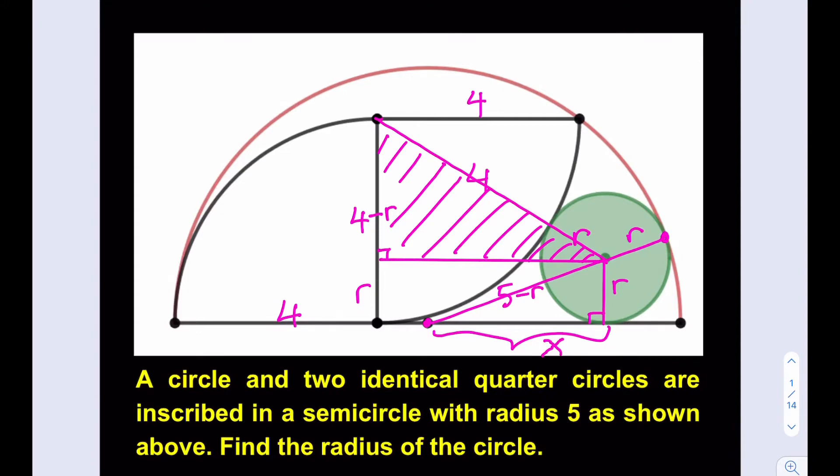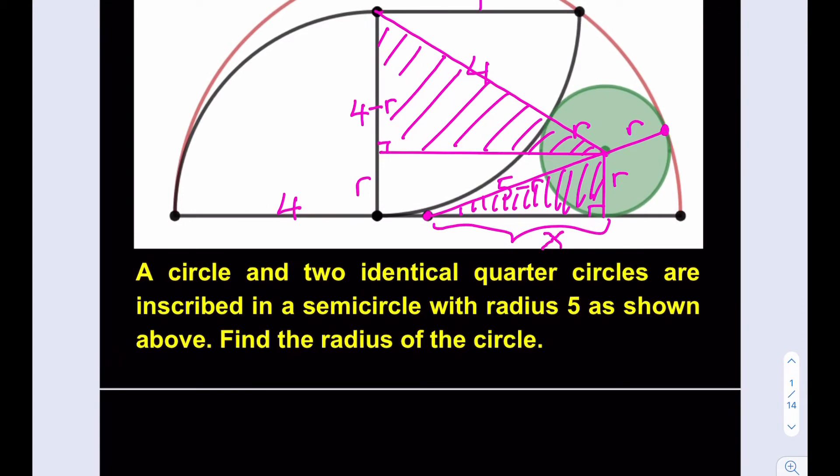If you extend that segment, you're going to notice that this is also r and the whole thing is the radius for the semicircle which is 5. So the hypotenuse here is going to be 5 minus r. Basically I have two right triangles that I can use and I have two variables, so I should be able to solve for r. Now, since this whole thing is 4, and this should be 1. Why? Because the radius of the semicircle is 5, so if you subtract 4, 5 minus 4, you're going to get 1.